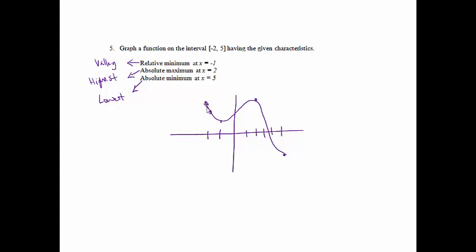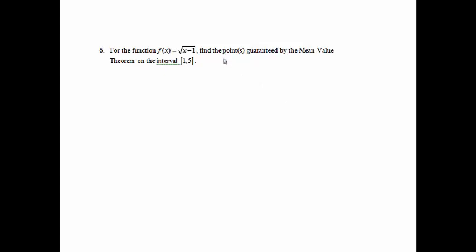I want to make that min go a little bit lower so it's not confused with the absolute max. Number 6: For the function f(x) = √(x − 1), find the points guaranteed by the Mean Value Theorem on the interval 1 to 5.